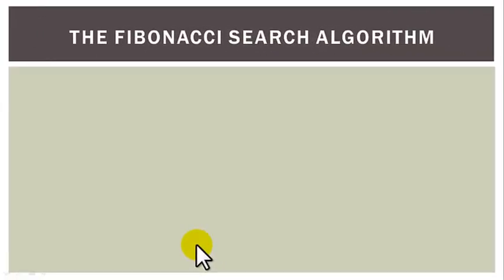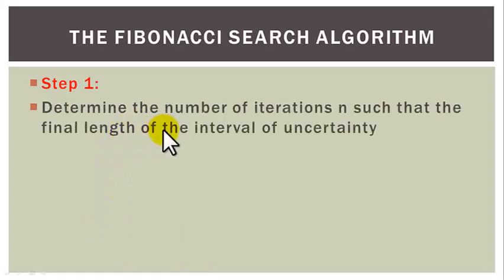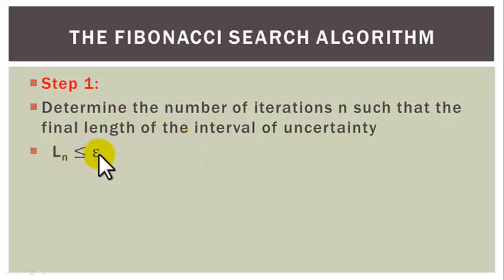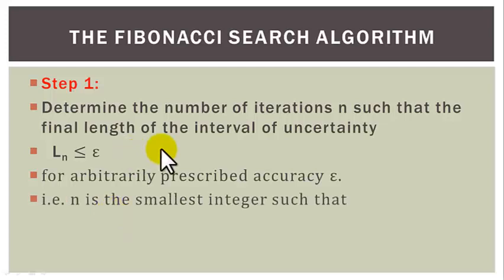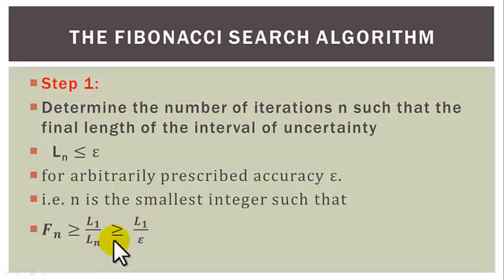Now let us take the Fibonacci search algorithm. Step 1: determine the number of iterations N such that the final length of interval of uncertainty LN is less than or equal to Epsilon for arbitrarily prescribed accuracy Epsilon. That is, N is the smallest integer such that FN is greater than or equal to L1 over LN, which is greater than or equal to L1 over Epsilon, since LN is required to be less than or equal to Epsilon.